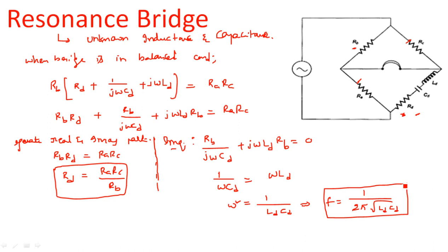By equating the real part we obtained the unknown resistance value. Using the same formula f = 1/(2π√(LD × CD)), we can also calculate the unknown capacitance as well as inductance.